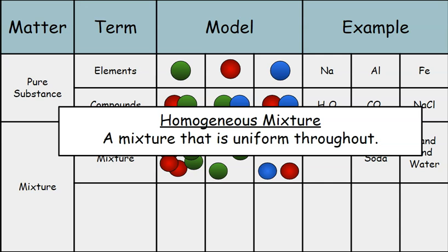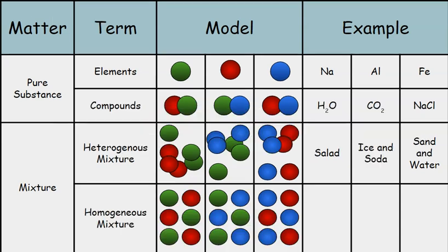Now, let's discuss homogeneous mixtures. They are a mixture that is uniform throughout. Because a homogeneous mixture is uniform throughout, we can't tell that it is made up of more than one thing. It looks like it's one thing, but it's actually made up of two, three, four or more things.